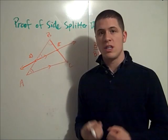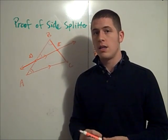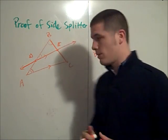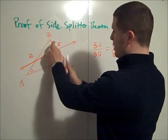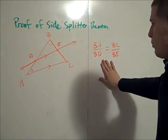If two figures are similar then their corresponding sides are proportional. And since BA corresponds to BD and BC corresponds to BE I get this proportion.